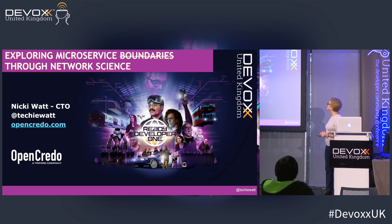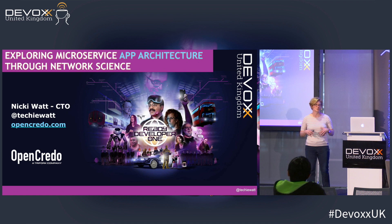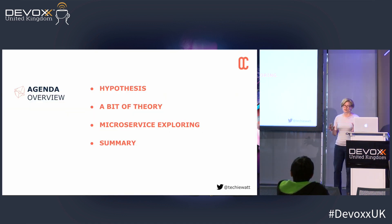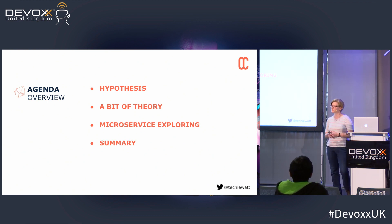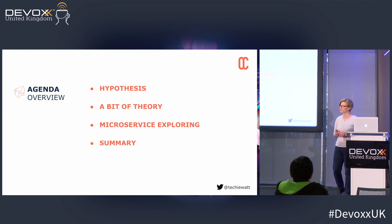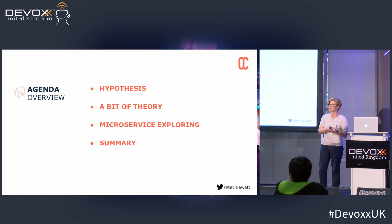The original title was 'Exploring Microservice Boundaries.' I'm actually going to expand that a little bit and speak about application architecture because it fits slightly better. What we're going to do is start off and have a look at the hypothesis — what does it actually mean to explore a microservices architecture through network science? This is going to require we delve a little bit into graph theory and network science, and then we're going to use that theory to practically apply it to a microservice architecture and see how we can use those measures to gain some insight into the system.